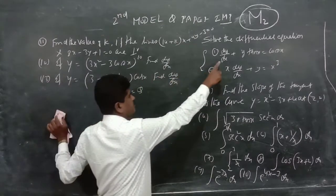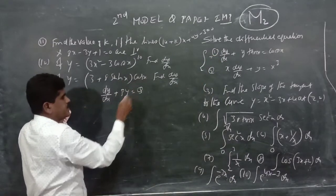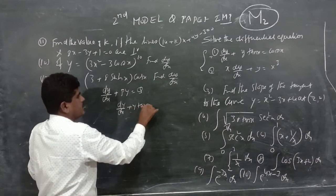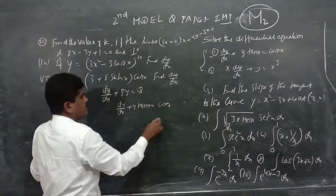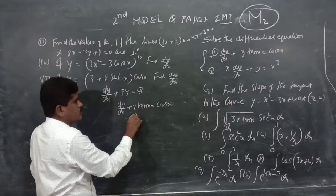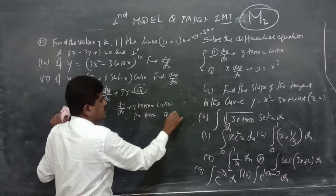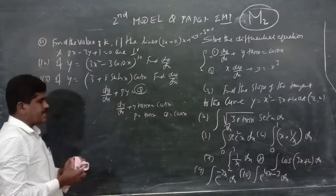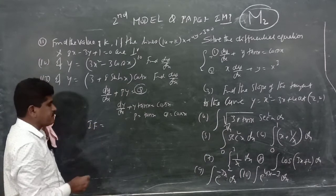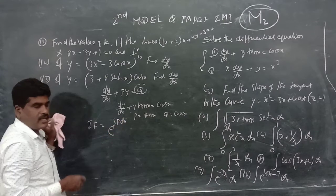The first problem is in the standard form dy/dx plus y·tan x equals cos x. The coefficient of y is the value of P, so P equals tan x. The right-hand side Q equals cos x. The integrating factor is e to the power of the integration of P dx.